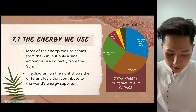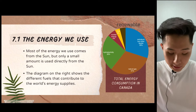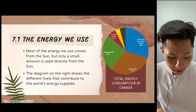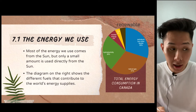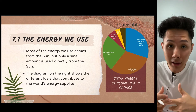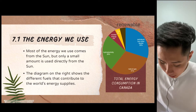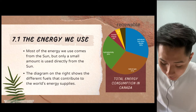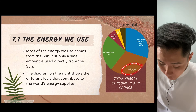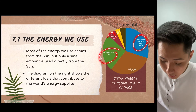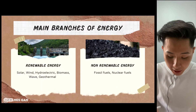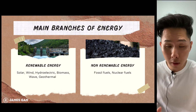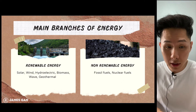Most of the energy we use on a day-to-day basis comes from the sun, but we don't actually use most of it directly. Here is a graph of the total energy consumption in Canada, showing we use different types of energy — natural gas, petroleum, hydroelectric, nuclear, coal, and so on. There are two branches of energy: renewable and non-renewable, and we're going to look briefly into how each of them works.